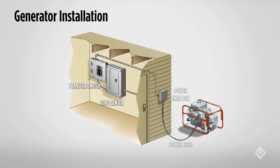When installing a generator, follow all local, state, and national electrical code requirements. A transfer switch is required by the National Electrical Code. A transfer switch is a safety device to isolate the utility electrical supply from the generator, to prevent the generator from back-feeding into utility lines, which can cause serious injury. A transfer switch should have a load applied, and it allows the motor to be turned off and on independently of the generator. Code also requires that the generator be properly grounded per manufacturer's instructions.